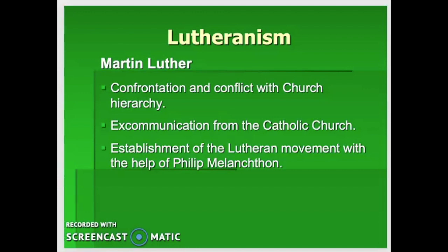Martin Luther was able in that year to translate the New Testament into the German of the 1500s. He was eventually excommunicated from the Roman Catholic Church, and seeing that the Church did not wish to be reformed, he believed his only option was to start an independent Christian movement, which became known as Lutheranism. His protege Philip Melanchthon was the organizer, and together they established the Lutheran movement.